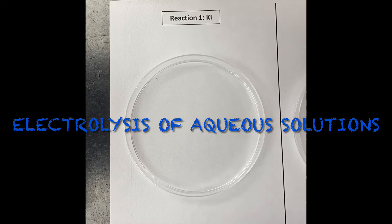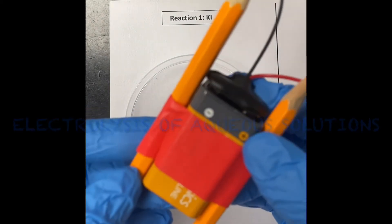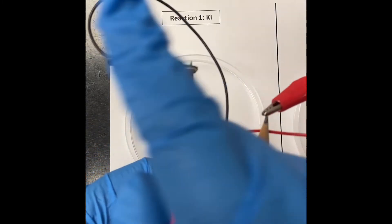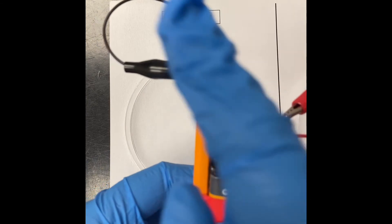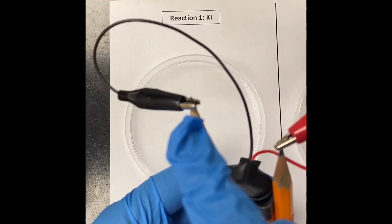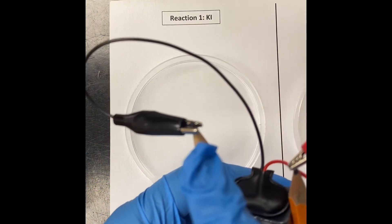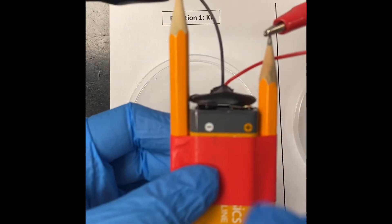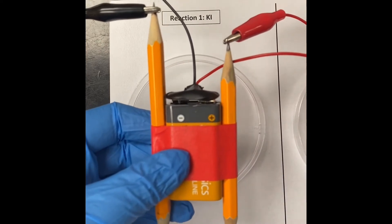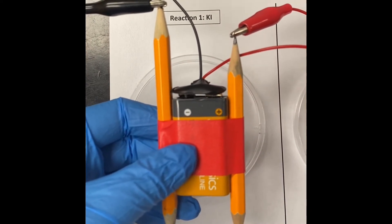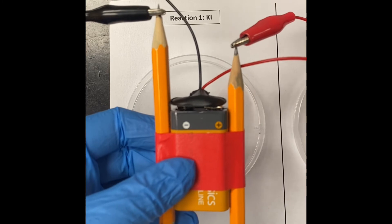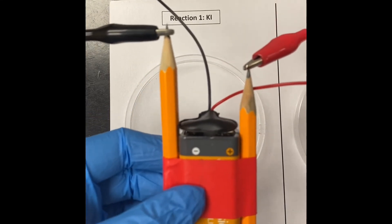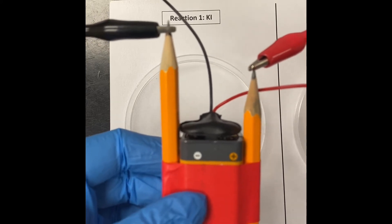So here's my initial setup. I have a 9-volt battery connected to this little clip with wires coming out of it, which is connected to these alligator clips. As you can see, they look like a little mouth with little teeth. I have two pencils that are sharpened on both sides here, and the reason the pencils are sharpened on both sides is because the graphite inside the pencil acts as an electrode and can conduct electricity from the battery into my solution.